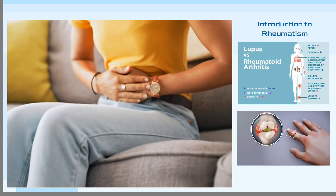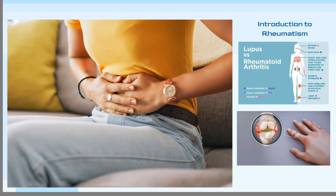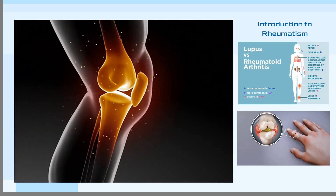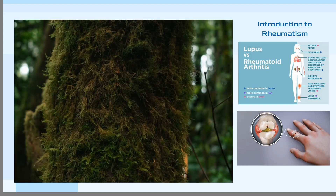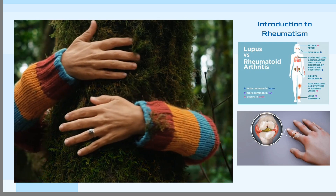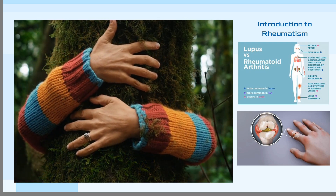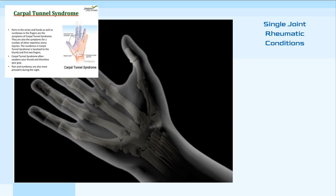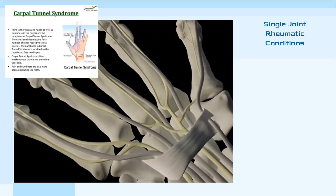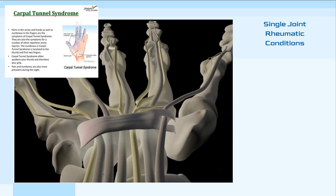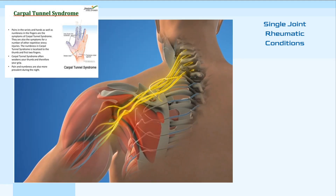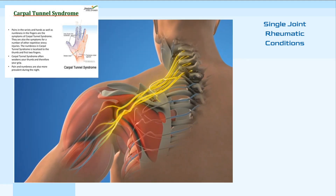Meet rheumatism, a broad term for describing pain and inflammation in joints, muscles, and connective tissues. The term originated from the Greek word rhumos, signifying fluidity or infiltration. Rheumatism doesn't discriminate — it can affect one joint or one area of the body. Conditions like gout, repeated stress injury, frozen shoulder, and carpal tunnel syndrome fall under this category.